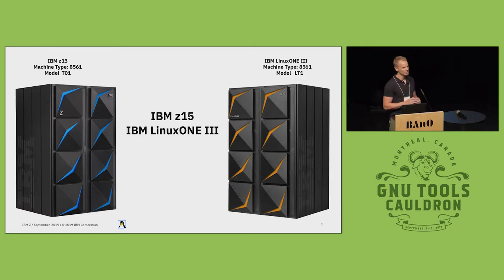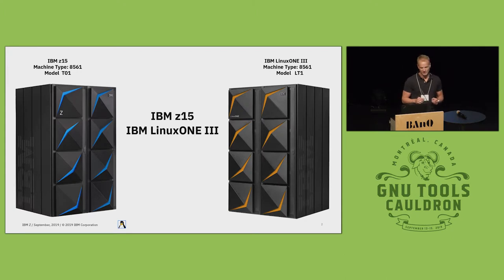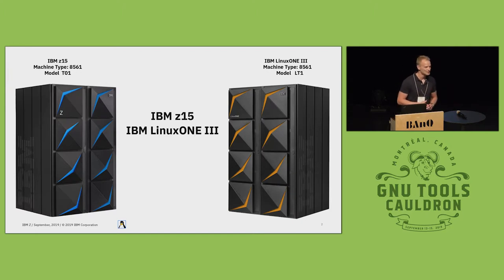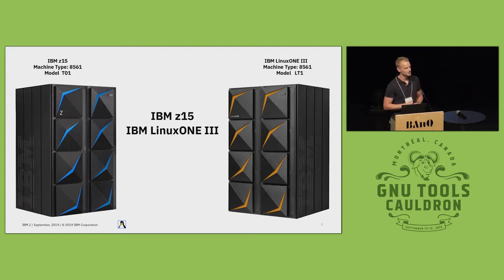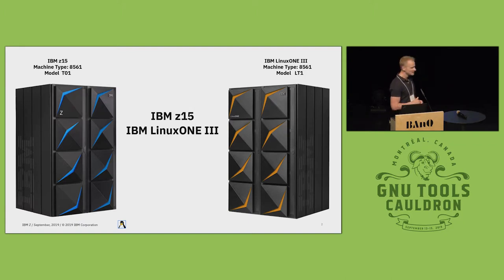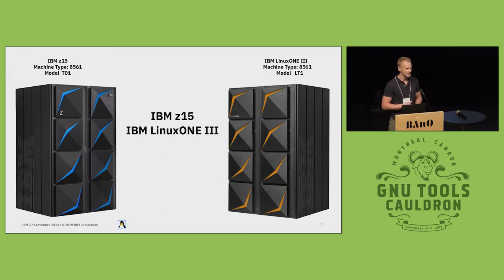The CPU is exactly the same, so everything we talked about in this presentation applies to both machines. What IBM did is they shrank the size of the frame of the mainframe down to 19 inches. The predecessor was 24 inches and it was known to mess up compute center layouts around the world. Customers complained about that, and now we have 19-inch industry standard rack size. These two machines are in a two-box configuration; depending on configuration you can have one box up to four boxes.